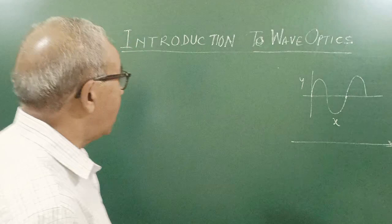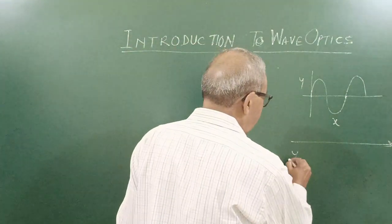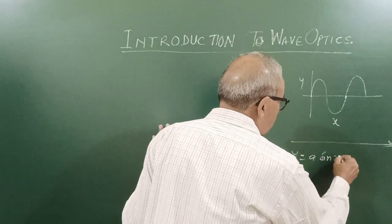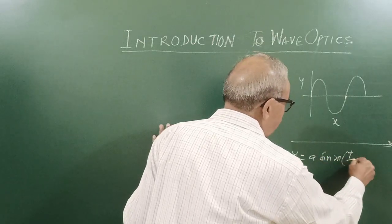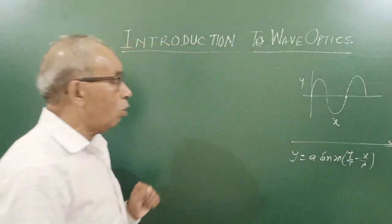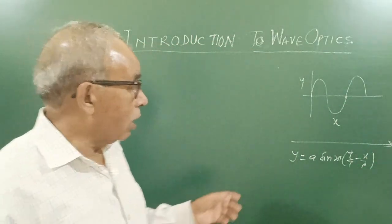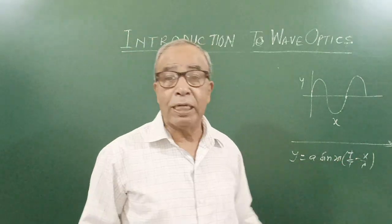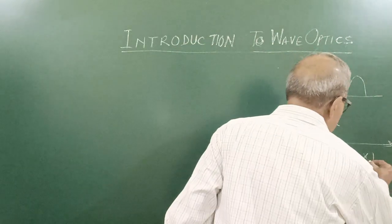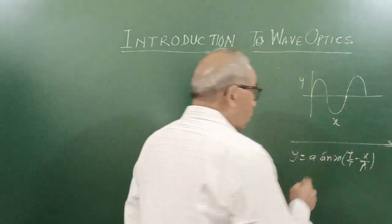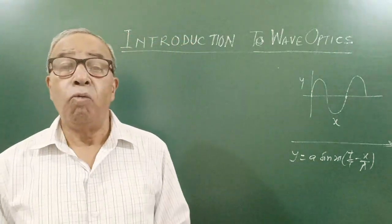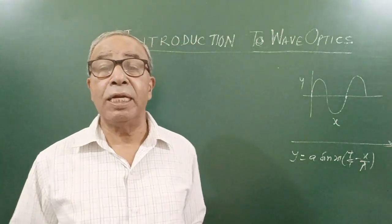In class 11, the equation of progressive wave is given by A sine 2π(T/T - X/λ). And you are told that is the equation of progressive wave traveling in positive direction. So when we are telling it is traveling, progressive wave traveling in positive direction, it means wave travels straight, in a straight line.